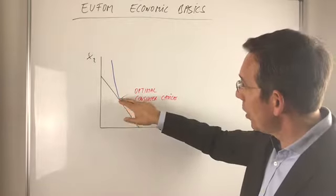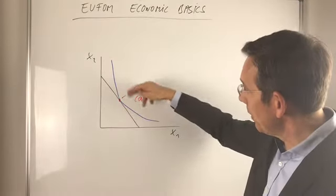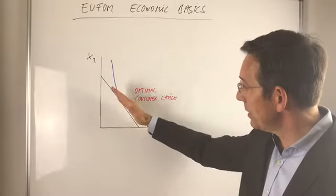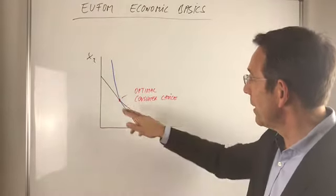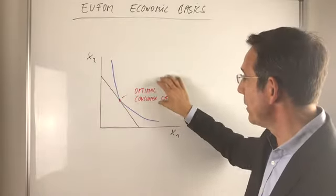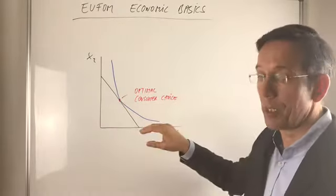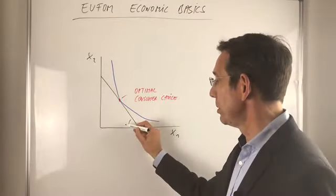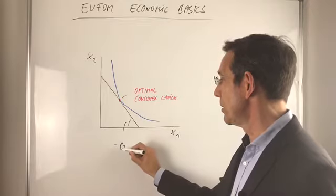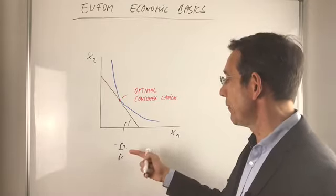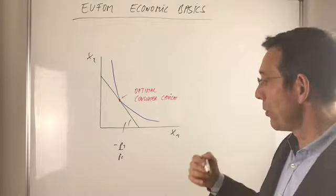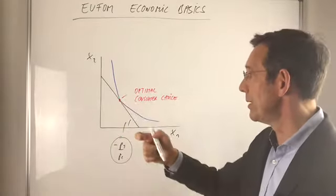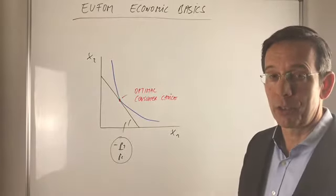And here where the indifference curve touches, that's the tangent point, touches the budget constraint, there we have the optimum. We have the optimal consumer choice for given prices. Please remember, these are the relative prices of these two goods and for these given prices, this here is the optimal consumer choice.